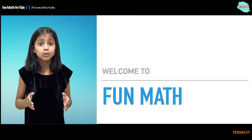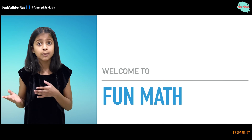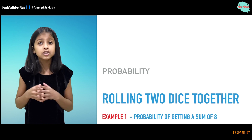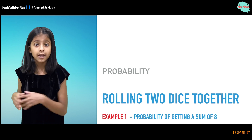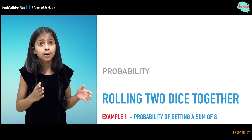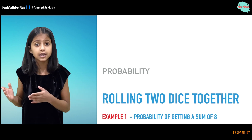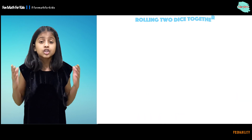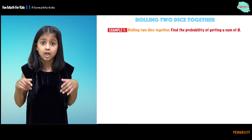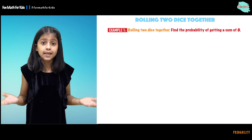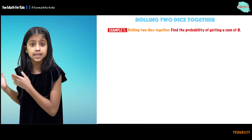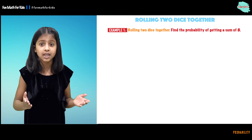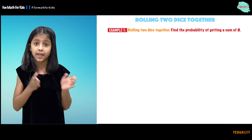Welcome to Fun Math. Today we will be continuing talking about probability. We will see rolling two dice together and we will be talking about the probability of getting a sum of 8. So the problem we will be talking about today is rolling two dice together and we will be finding the probability of getting a sum of 8.